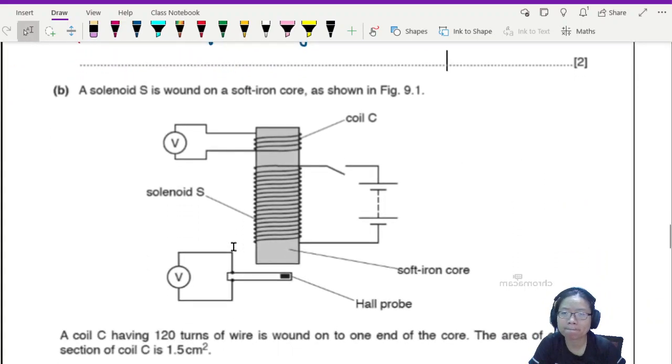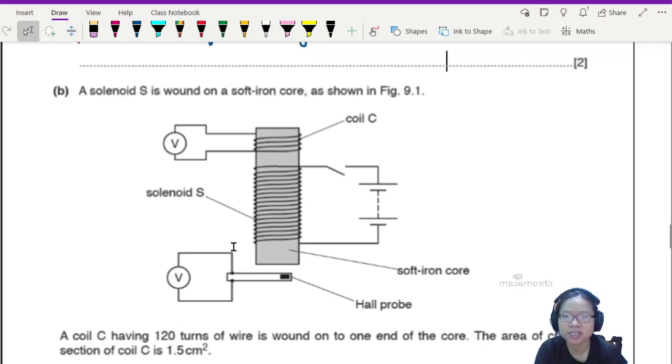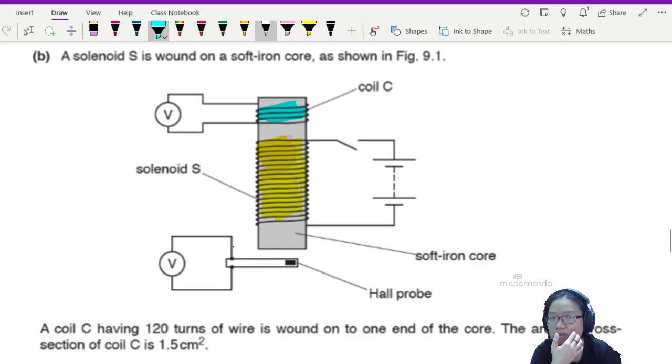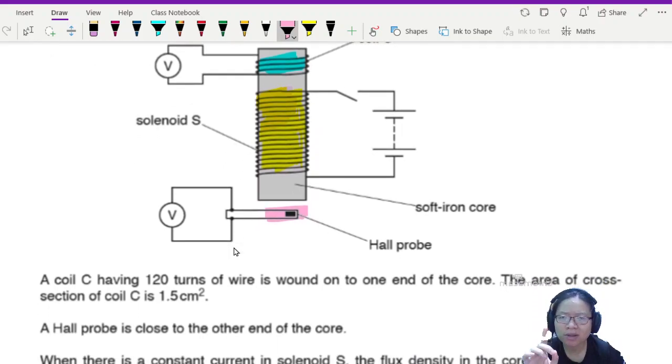Moving on to part B. Solenoid S is wound on the soft iron core as shown in figure 9.1. So there's a solenoid S here. This entire thing is my solenoid. And there's another coil C up here. And then there's also a hall probe down here. Many things! Moving on. Coil C has 120 turns of wire wound on one end of the core.